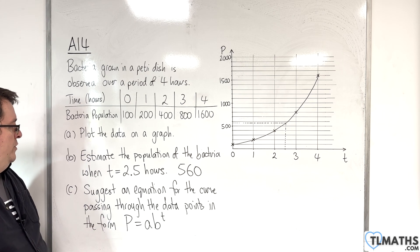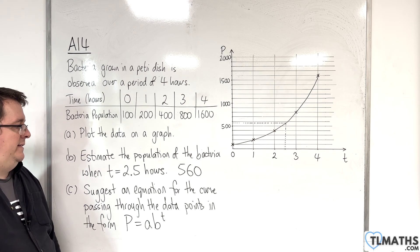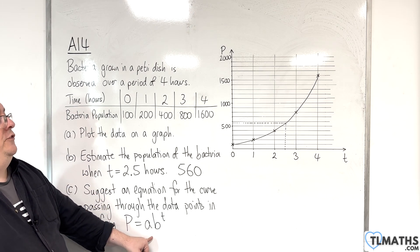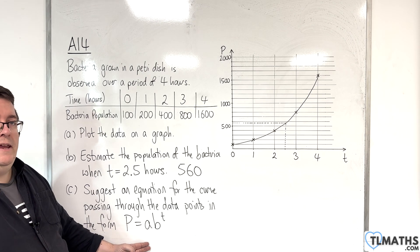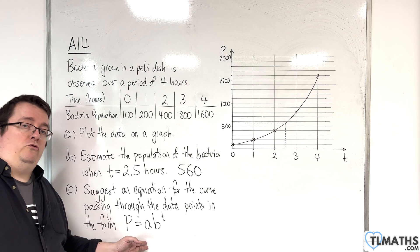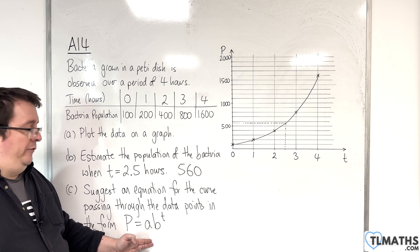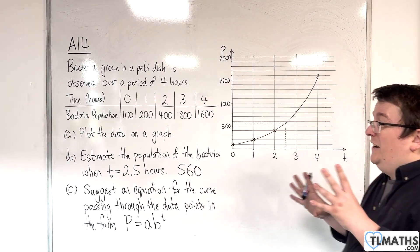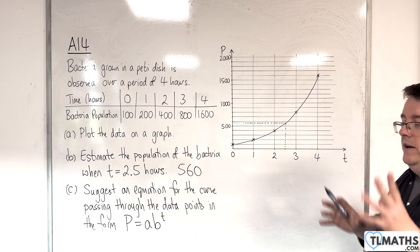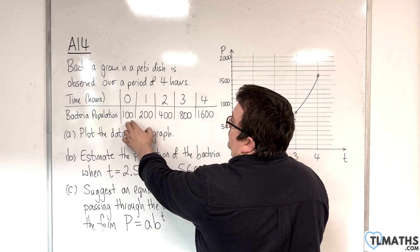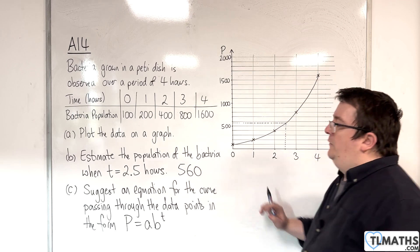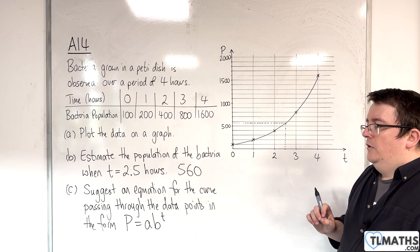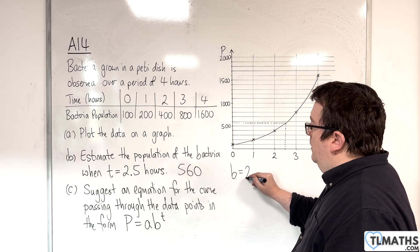Part C, suggest an equation for the curve passing through the data points in the form P equals AB to the T. Ordinarily, doing this is actually quite challenging if you've just got some data points. There are two unknowns to find, the A and the B. That leads on to a topic called reduction to linear form, which is something that is met at A-level maths. In order to do it in this scenario, the data is nice enough that we can kind of see what's going on. The fact that the data is doubling every time interval, every one hour, means that the B has to be 2. The B has got to be 2 because we're doubling.